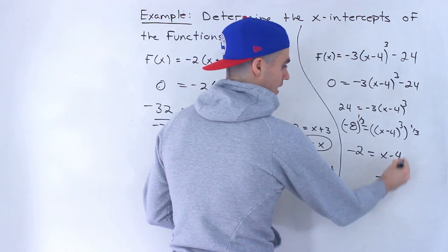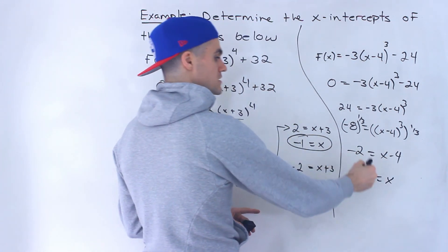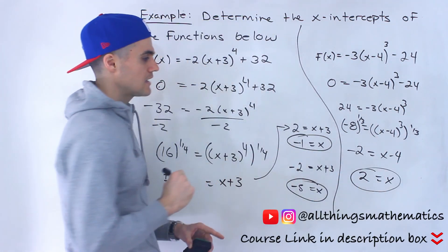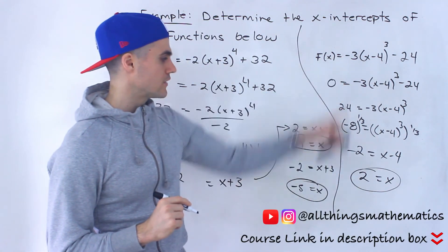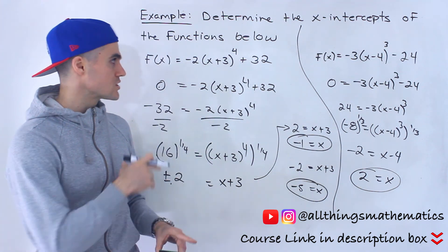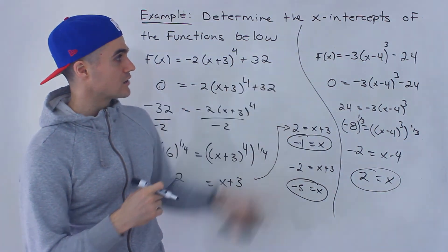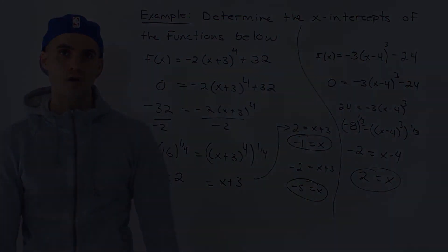And so now isolating for the x, bring the -4 over, -2 plus 4 gives us positive 2. So that ends up being the x-intercept for that function. So that's how the algebra works for a transformed x^4 function and a transformed x^3 function.